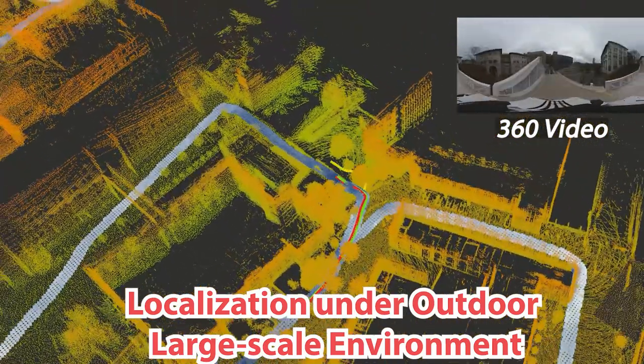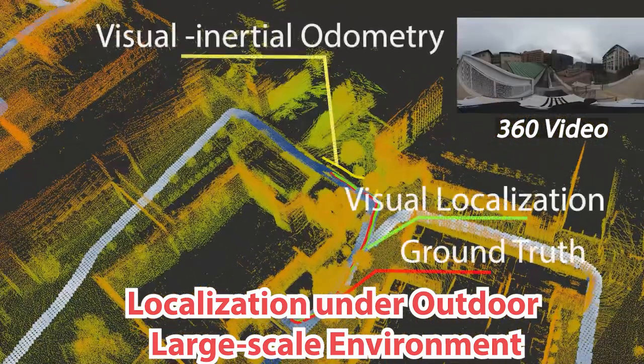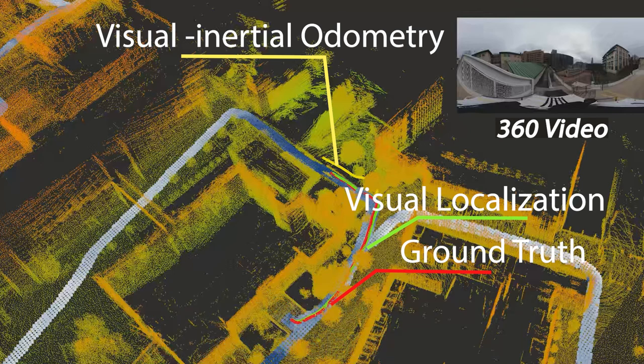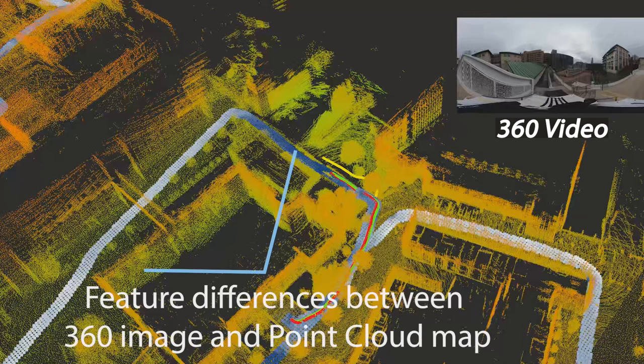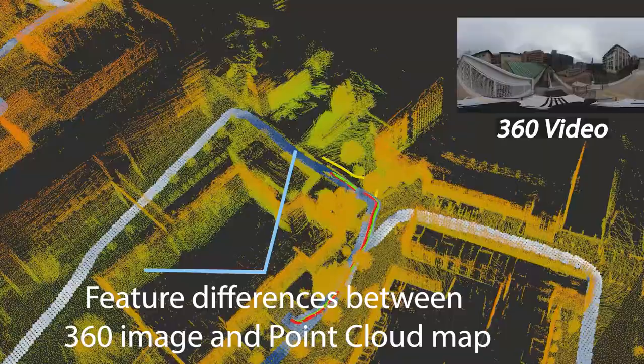In this demo of 3D localization, we visualize the visual odometry, ground truth, our estimation, along with the feature differences between the 360 image and point cloud map.